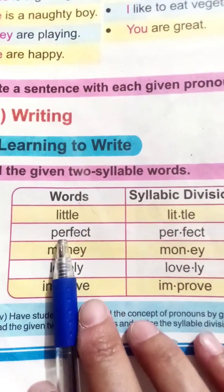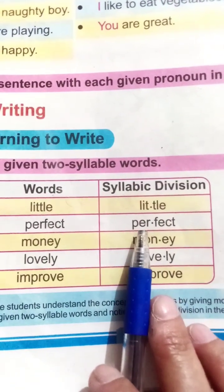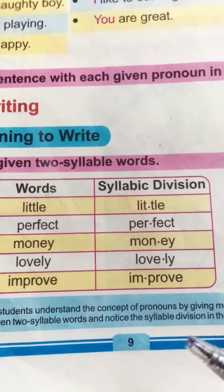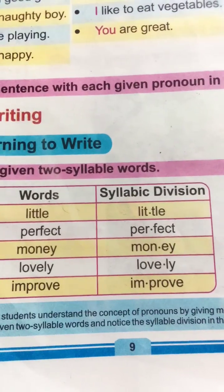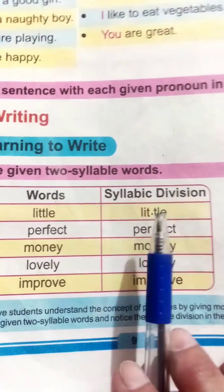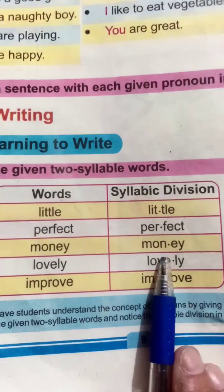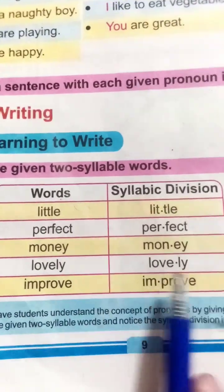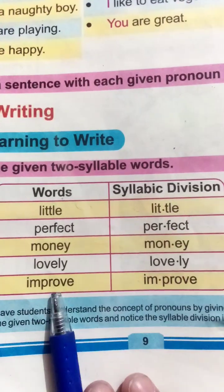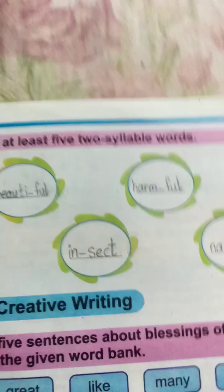Next example: 'perfect' - it is a two-syllable word, said in two parts. Some words can have three syllable parts too. Two syllable words examples: money - mo-ney; lovely - love-ly; improve - im-prove, first part is 'im,' second part is 'prove.' Now let's solve Page No. 10, Question No. 2.